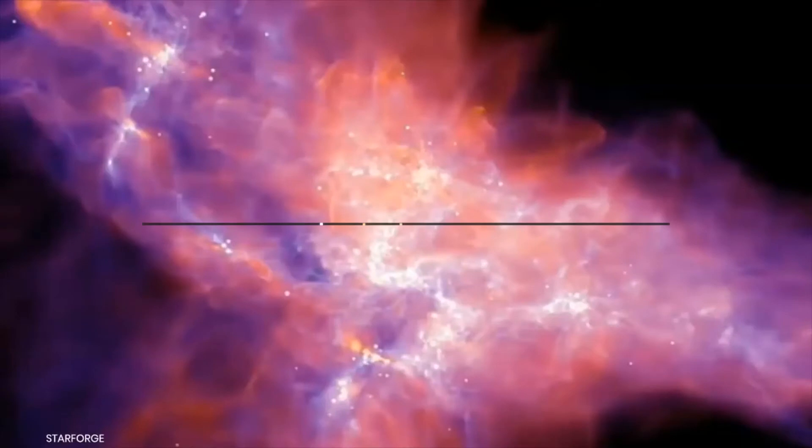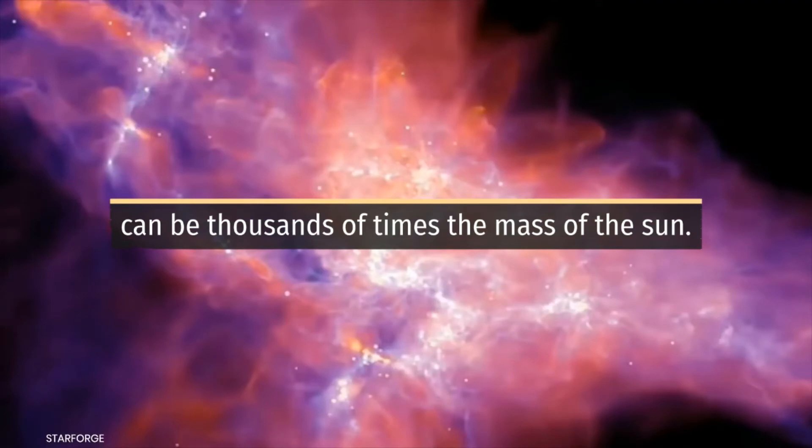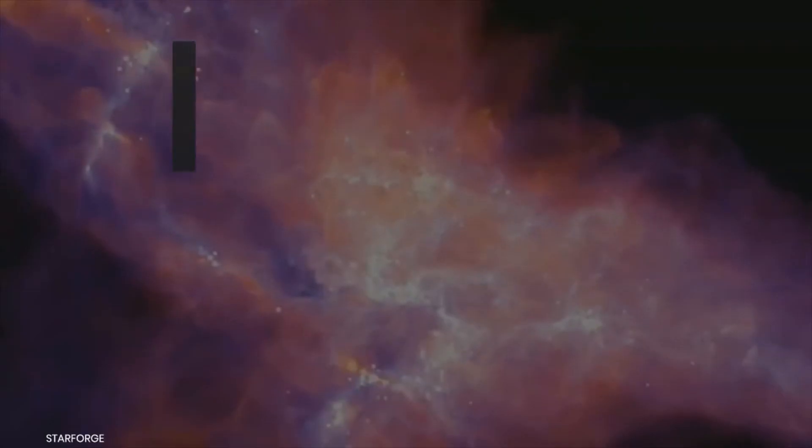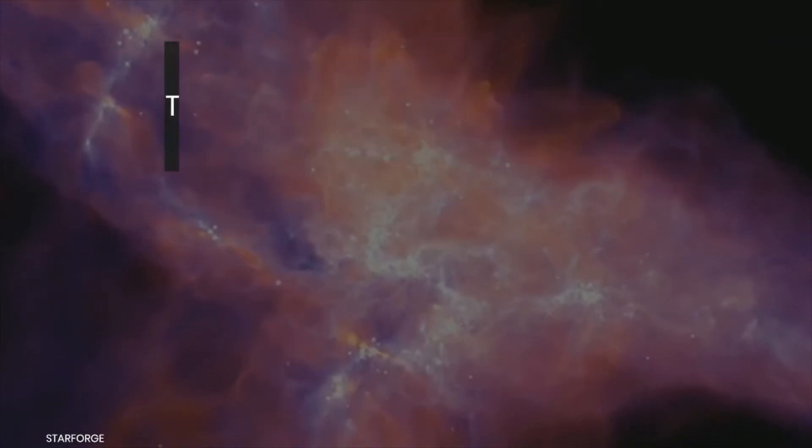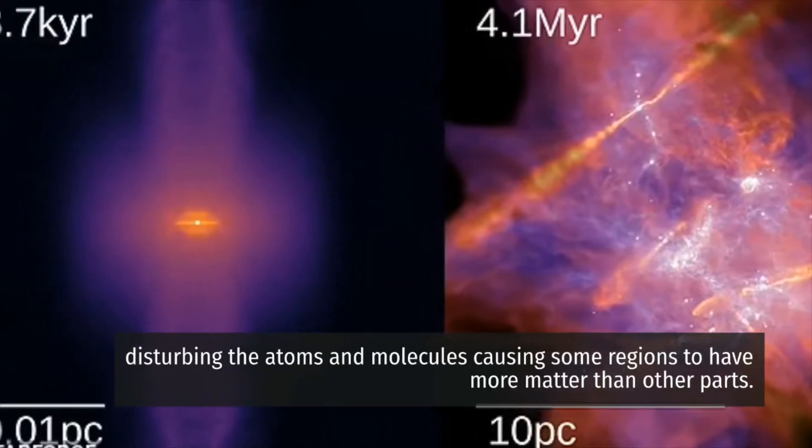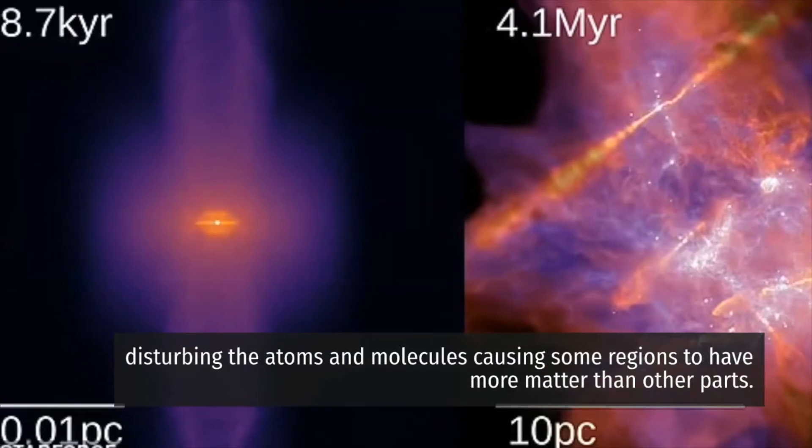A single molecular cloud, which primarily contains hydrogen atoms, can be thousands of times the mass of the sun. They undergo turbulent motion, with the gas and dust moving over time, disturbing the atoms and molecules, causing some regions to have more matter than other parts.